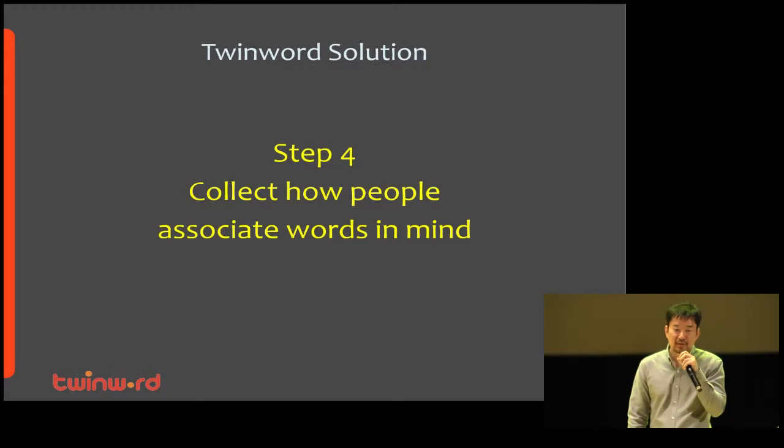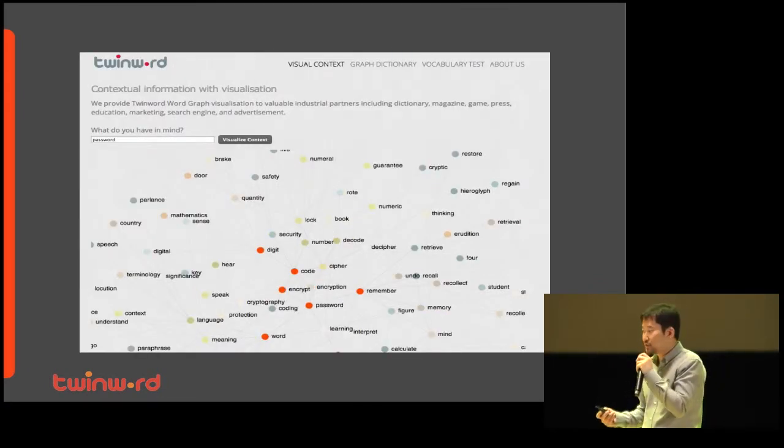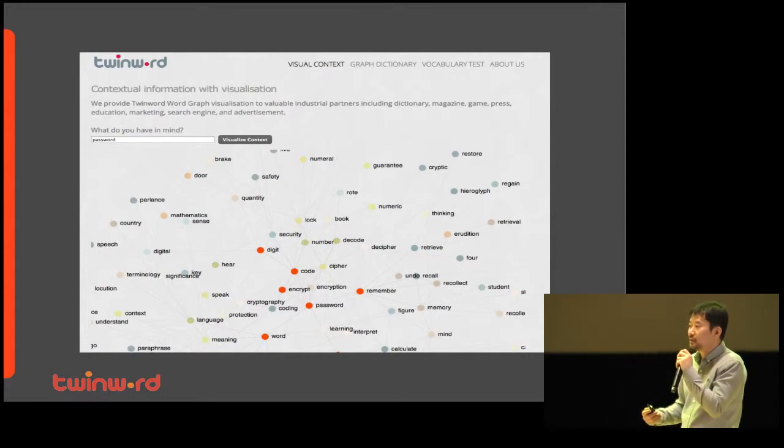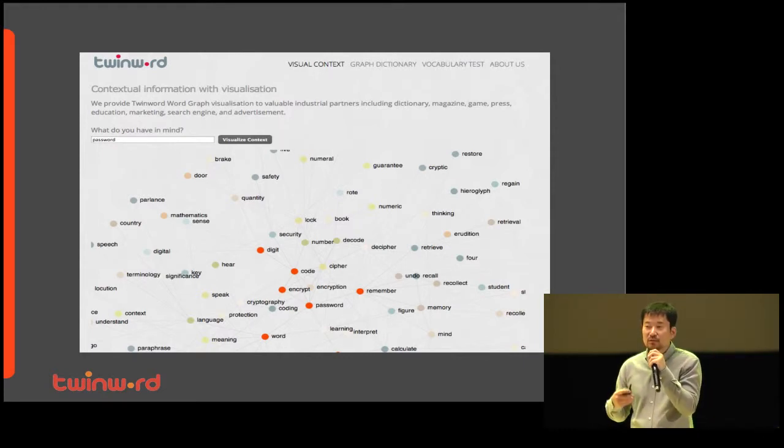As a final step, Twinord collects how people associate words in mind. Test takers get study materials while Twinord gets big data about how people associate words. So we can build more sophisticated word graphs.